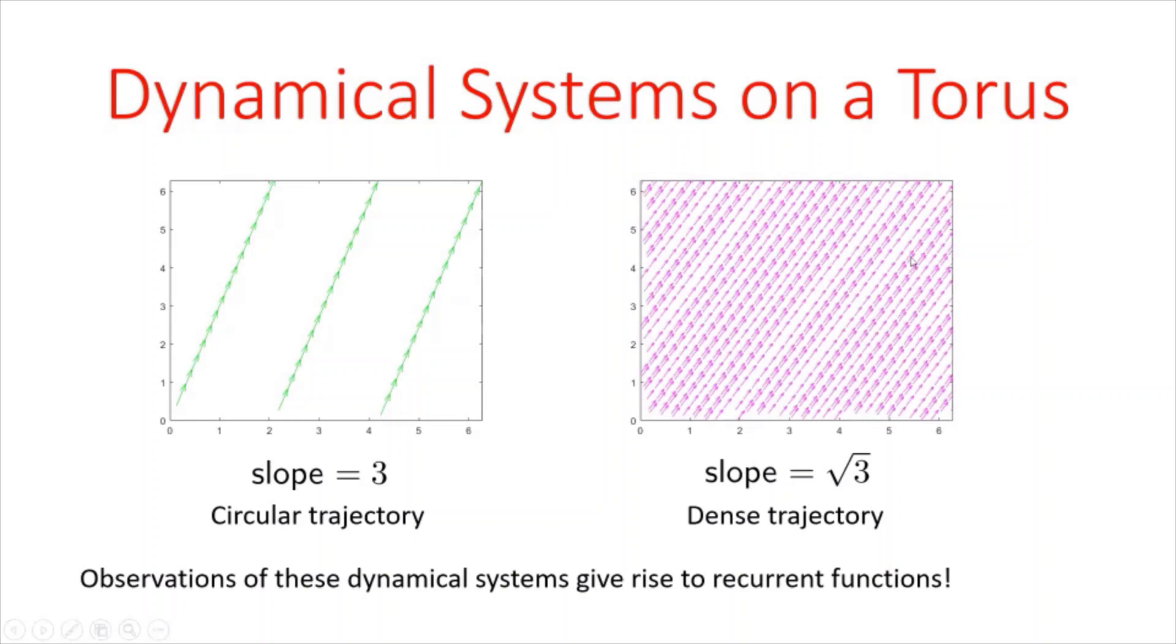On the right, in this pinkish purple color, my origin actually moves with a slope of square root of three under the dynamical system. So on the left, my trajectory is repetitive in nature, so it's actually circular, while on the right, my trajectory is dense in this two torus. Now, I am focusing on these dynamical systems on a torus because observations of these dynamical systems actually give rise to recurrent functions.